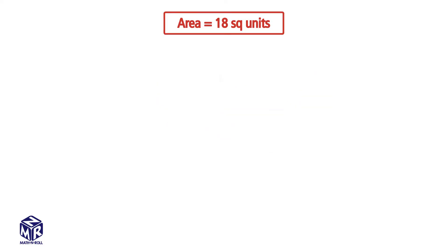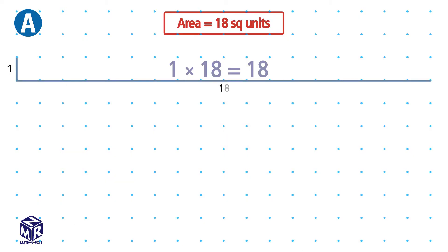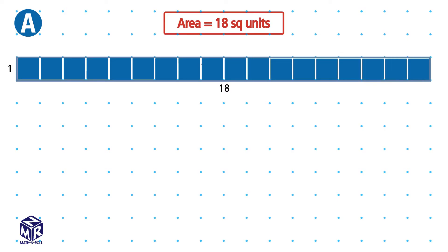Now let's draw them using geopaper. 1 times 18 equals 18 means that one side is 1 and the other side is 18. The opposite sides are equal. Let's check the area. Yes, the area is 18 square units.